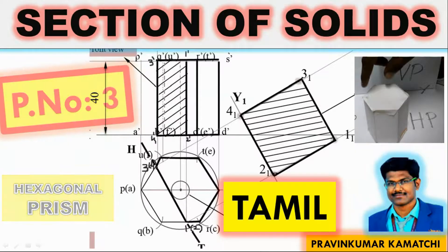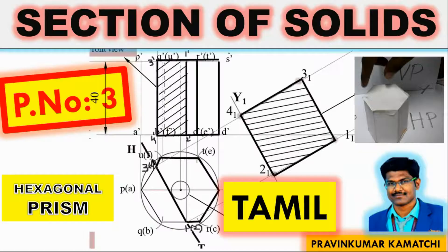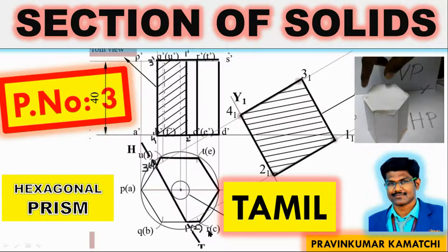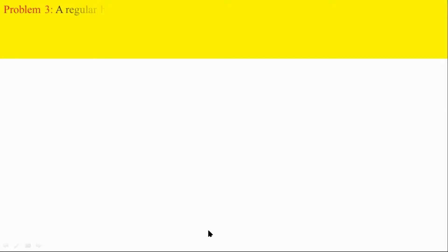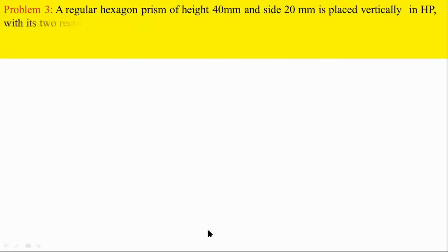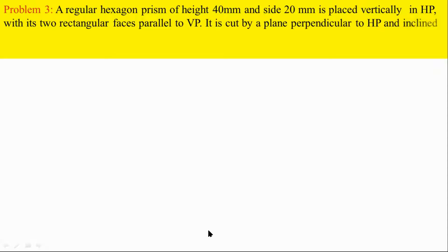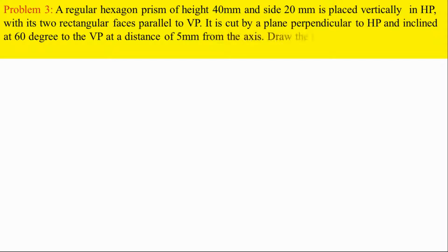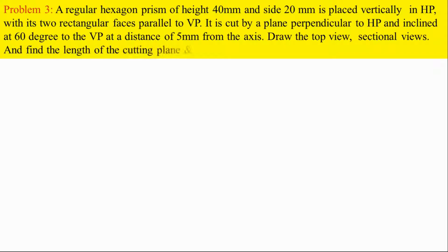Welcome guys! In the section of solids topic, problem no.3 — cutting plane HP cut. Problem note: A regular hexagonal prism of height 40mm and side 20mm is placed vertically in HP with its true rectangular faces parallel to VP. It is cut by a plane perpendicular to HP and inclined at 60 degrees to the VP at a distance of 5mm from the axis. Draw the top view, sectional views and find the length of the cutting plane and height of the true shape.